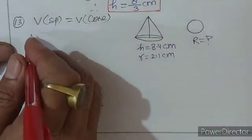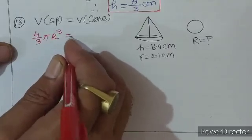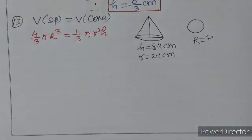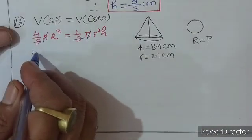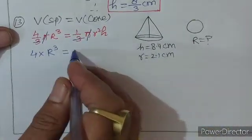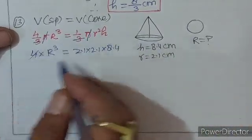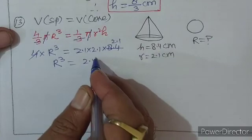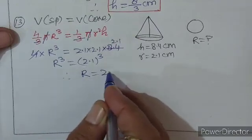Volume of sphere = Volume of cone। (4/3)π r³ = (1/3)π R² h। π से π cancel, 3 से 3 cancel। 4r³ = R² × h = 2.1 × 2.1 × 8.4। 4 से 8.4 cut होगा: 4 × 2.1 बनेगा। r³ = 2.1³। r = 2.1 cm।